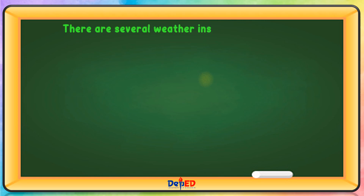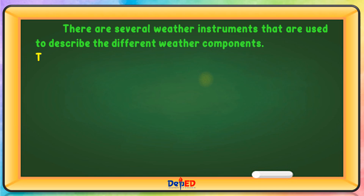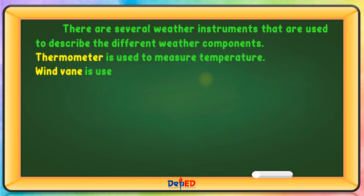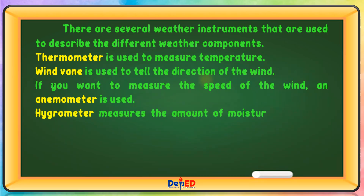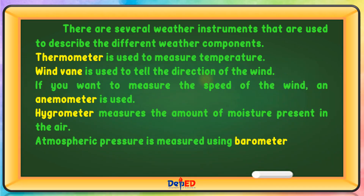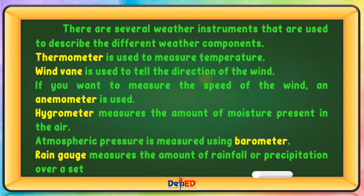There are several weather instruments that are used to describe the different weather components. First, there's the thermometer — it's used to measure temperature. A wind vane is used to tell the direction of the wind. If you want to measure the speed of the wind, an anemometer is used. A hygrometer measures the amount of moisture present in the air. Atmospheric pressure is measured using a barometer. A rain gauge measures the amount of rainfall or precipitation over a set period.